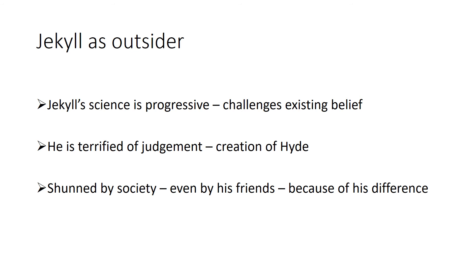Let's deal with Jekyll as a lonely character, as an isolated character, as an outsider. His science is progressive, very much like Darwin's theories — Jekyll's science challenges existing belief, and it's what causes Lanyon's demise. Jekyll, like most of the characters in this novel, is terrified of judgment. And that is primarily the reason that he creates Hyde. Hyde is a means of releasing his inner self, his darker side, without the fear of judgment of society.